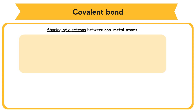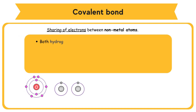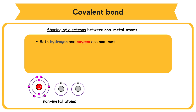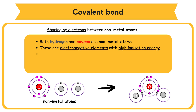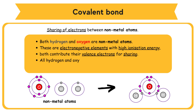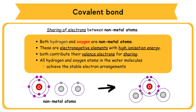A covalent bond involves the sharing of electrons between non-metal atoms. Both hydrogen and oxygen are non-metal atoms and electronegative elements with high ionization energy; hence these atoms do not donate their valence electrons. Instead, both oxygen and hydrogen atoms contribute their valence electrons for sharing. All hydrogen and oxygen atoms in the water molecule achieve stable electron arrangements — duplet or octet.